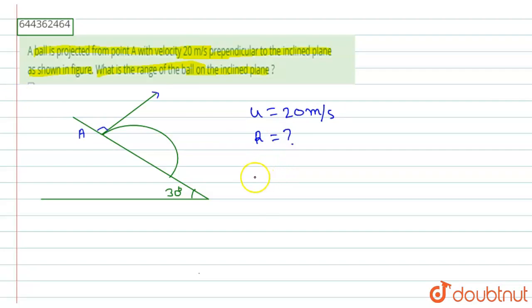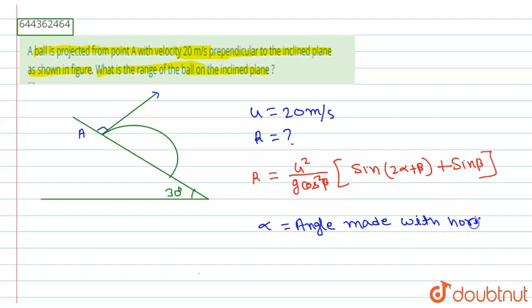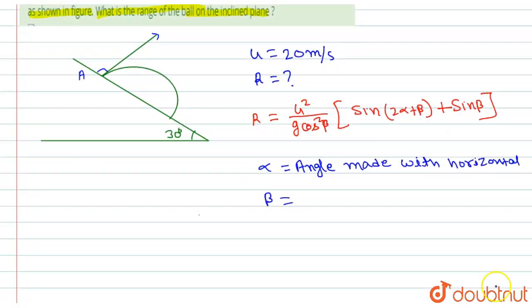For the range we can use a formula directly. This formula is R equals U squared divided by G·cos²β, multiplied by (sin(2α + β) minus sin β). Here, alpha is the angle made with the horizontal, and beta is the angle made with the vertical.